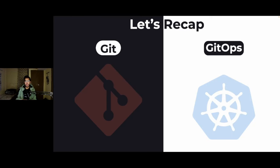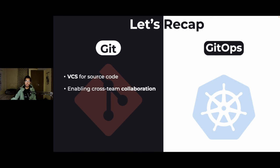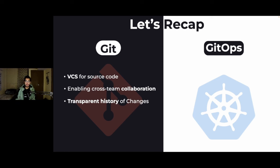Let's quickly recap our knowledge on what Git is and how it is utilized in a GitOps workflow. Git is a version control system that you can use to store the source code of your application. It enables cross-team collaboration, meaning everyone in your organization can have access to the source code. The number one reason people use Git is having a transparent history of changes — Git helps you maintain a version history so you can go back if anything breaks.